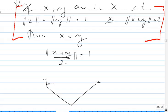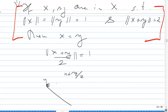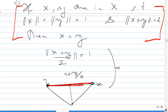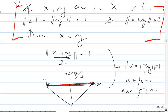If you take the midpoint X plus Y over 2 and it has norm 1, then the entire segment will have norm 1 — meaning the norm of alpha X plus beta Y equals 1 whenever alpha plus beta equals 1, alpha positive, beta positive. So the entire segment will be on the surface. That's what it means to be strictly convex: you cannot find a segment on the surface of the unit ball — or any ball, as a matter of fact.